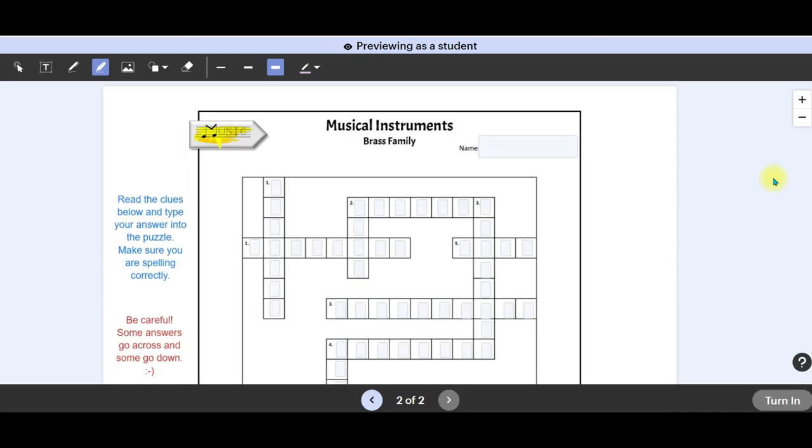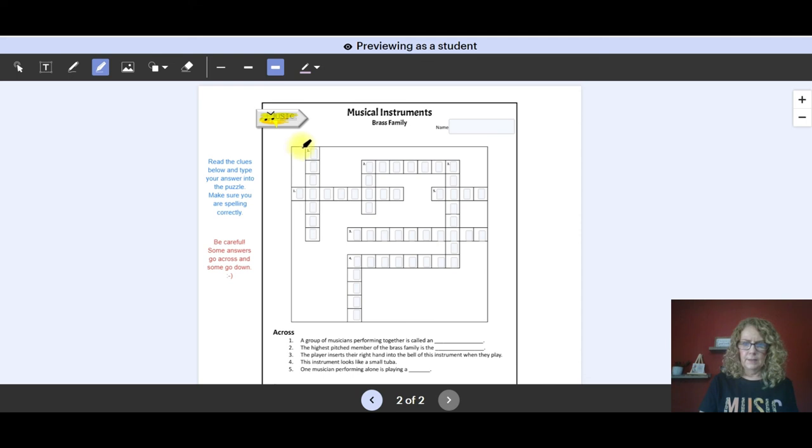This is a crossword puzzle and so students have to read the directions down here and then type the answer into here. Number one across, a group of musicians playing together is called an ensemble.